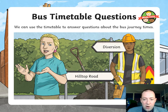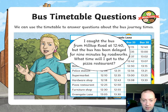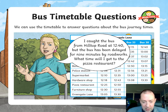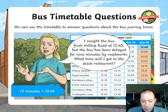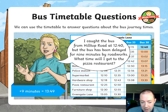We can use timetables to answer questions about bus journey times. If I caught the bus from Hilltop Road at 1240, but the bus has been delayed for 9 minutes by roadworks, what time will I get to the pizza restaurant? Hilltop Road at 1240, but the bus has been delayed by 9 minutes — so we're 9 minutes behind. It will get there 9 minutes later: 1340 add 9 minutes gives 1349 as your answer.